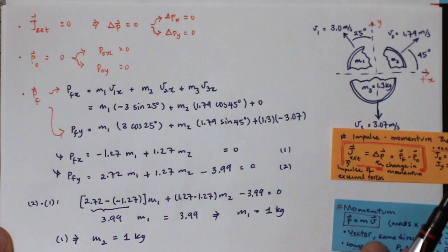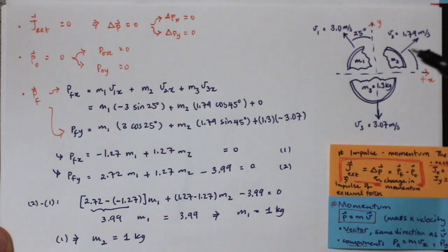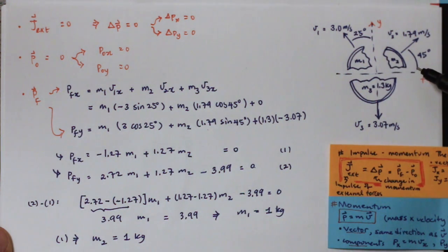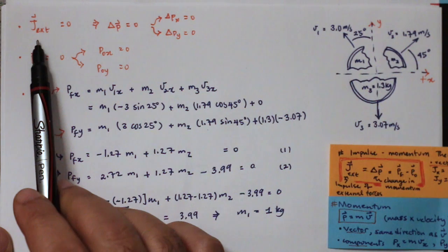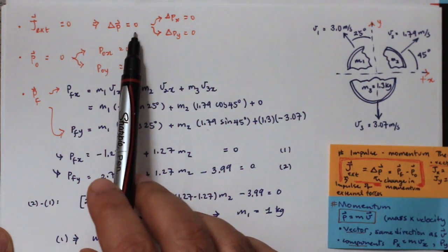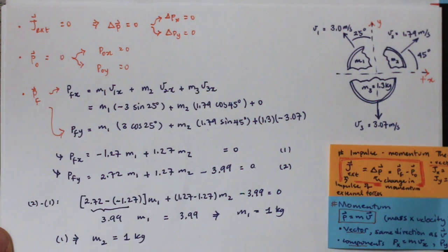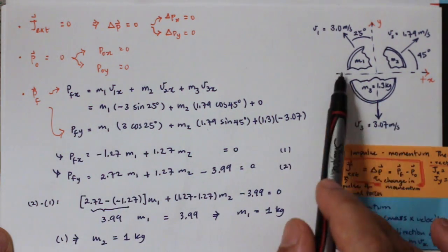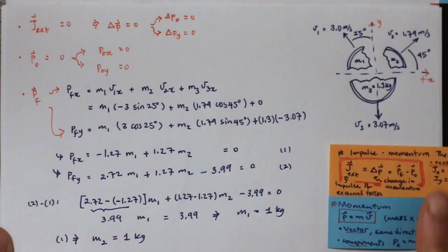To recap: before the collision, the plate's momentum was entirely vertical with no horizontal component in X or Y, so initial horizontal momenta were both zero. There were no external forces in the horizontal plane, so the external impulse was zero and horizontal momentum was conserved. The final momenta of the three pieces sum to zero, and substituting known values and solving the two equations yields M1 = 1 kg and M2 = 1 kg.